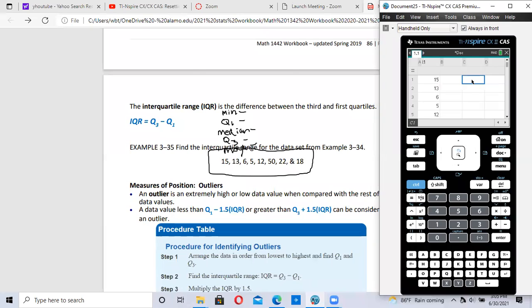And just like we did for mean and median and variance, we're going to go to menu. We're going to have the calculator do all the calculations for us. Menu, number four, statistics, number one, stat calculations.